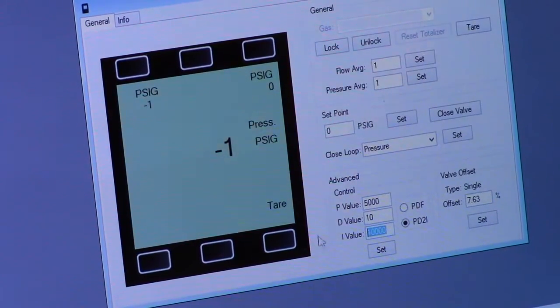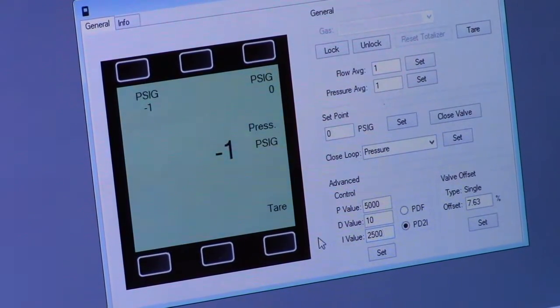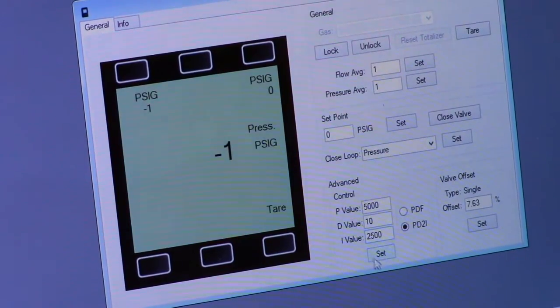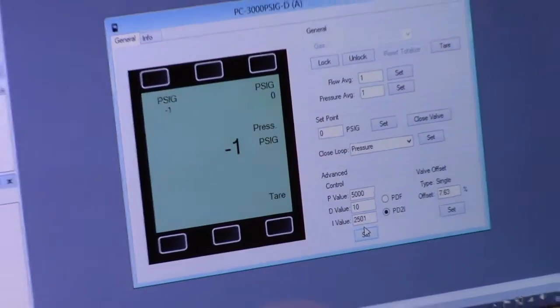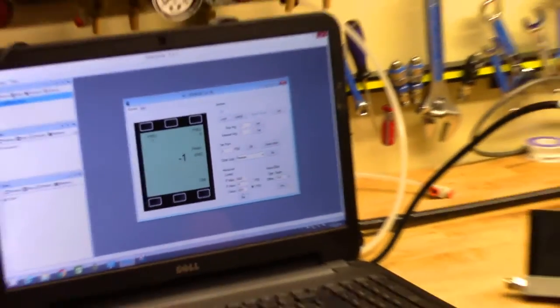The I value, if I wanted to change that to 2500, I would do that. And you click set. Those values will remain, like I said, even if the power is turned off or on.